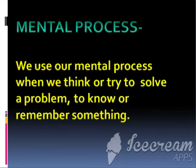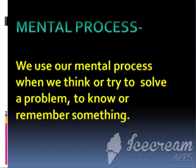Let's break down this definition. First, mental processes. We use our mental processes when we think and try to solve a problem, or to know or remember something. One level at which these mental processes are reflected is brain activity. As we think or solve a mathematical problem, our brain activities can be observed using different techniques of brain imaging. We cannot say that brain activities and mental processes are the same, although they are interdependent.